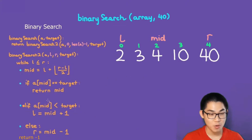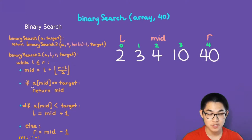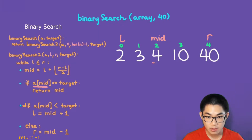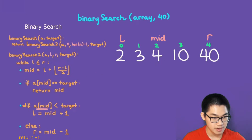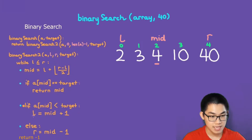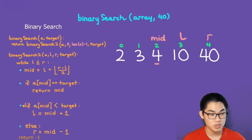Step number three - we have the if, else if, and else: three case scenarios. Looking at the first one: array at mid is number 4. Is 4 equal to the target 40? No. So we move to the next if: is 4 less than 40? Yes. So L equals mid plus 1, meaning we put L to the right of mid. We then delete the mid and repeat the process.